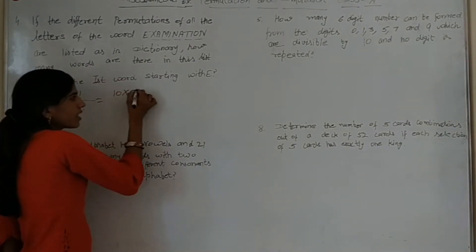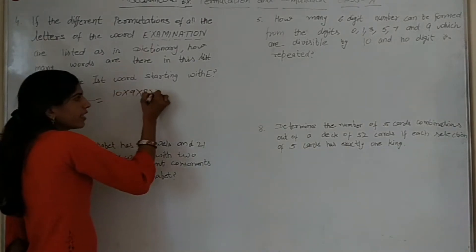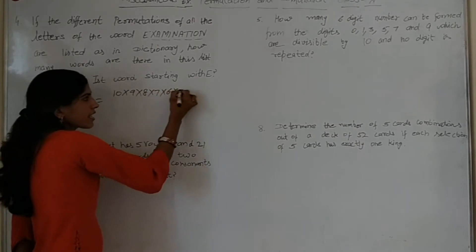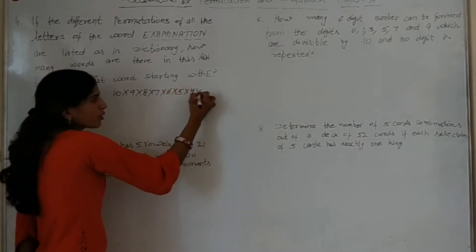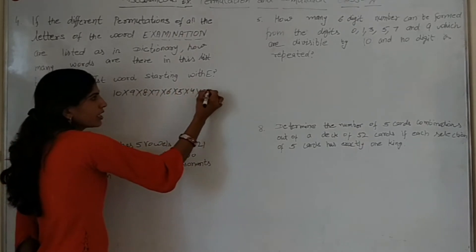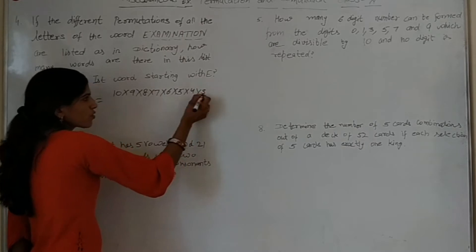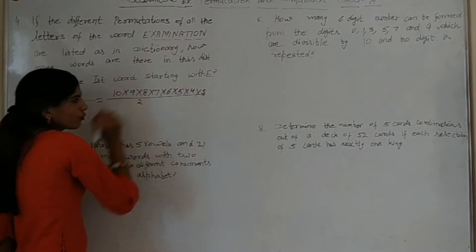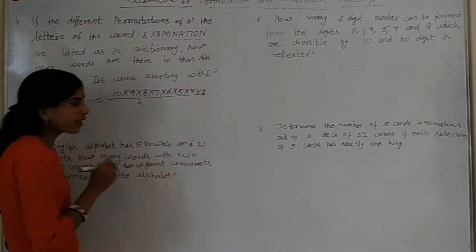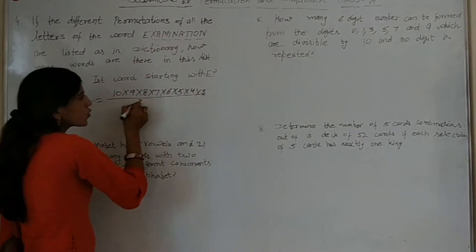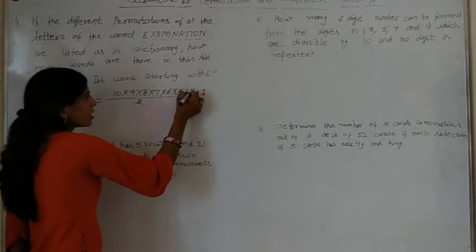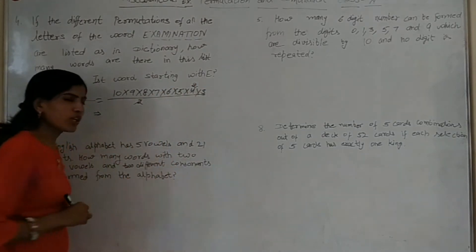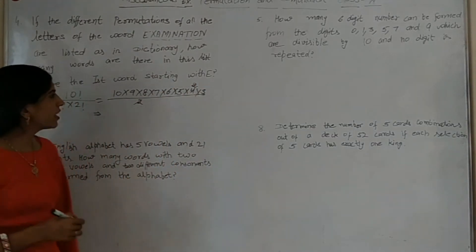Sol kijiye: 10 × 9 × 8 × 7 × 6 × 5 × 4 × 3, two se two karenge, by 2. Ek two raha gaya, two se ye, humne ye two karenge. Aur iski aap simple si calculation karenge hai.